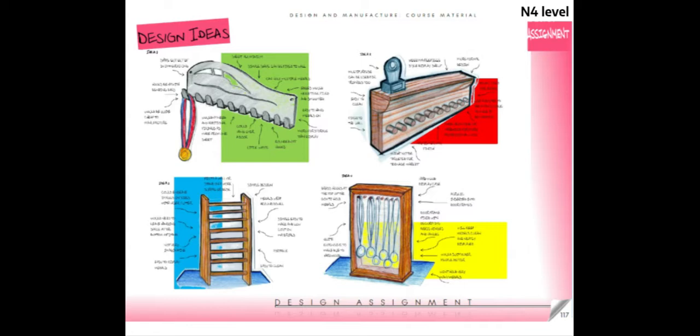The next few slides will go through some examples of initial idea or design idea pages at different levels as part of a design folio for different briefs. This first example is for national four level and is for a similar brief to the store hold display which we've been looking at through these example videos. As you can see, there are four very different ideas which have been shown in 3D and rendered to illustrate what material choices have been made. These sketches are very high quality for national four level but are the sort of quality you should be aiming for in design and manufacture.